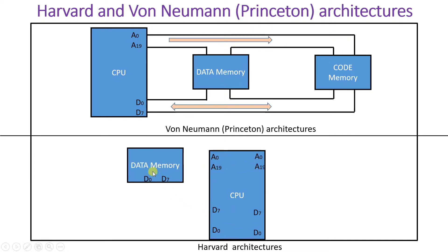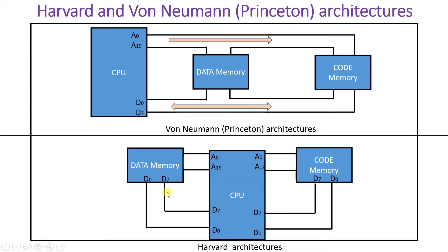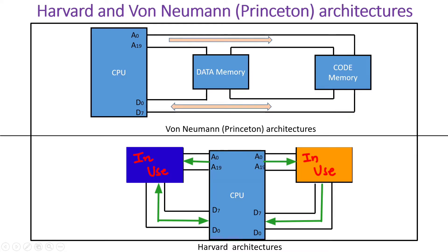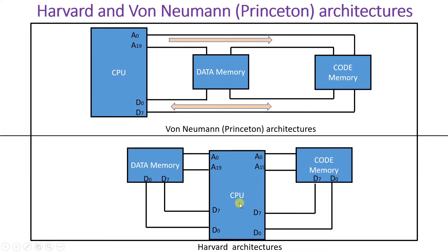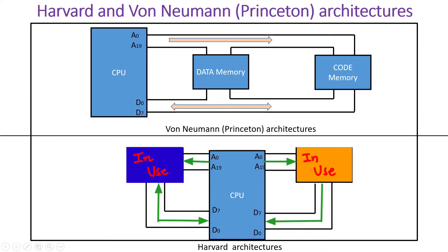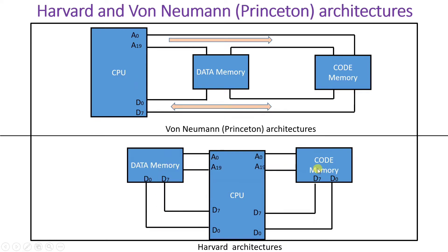With Harvard architecture, the CPU also has address and data lines interfaced with both data memory and code memory. However, the key advantage is that data memory is associated with different addresses compared to code memory. So both data memory and code memory can access the CPU at the same time.